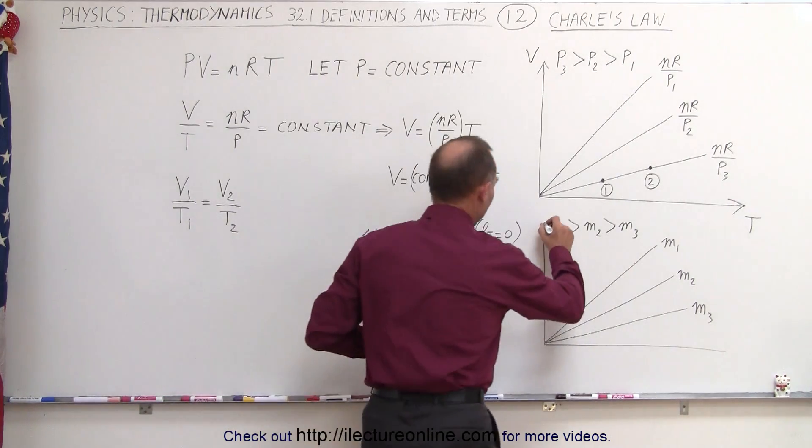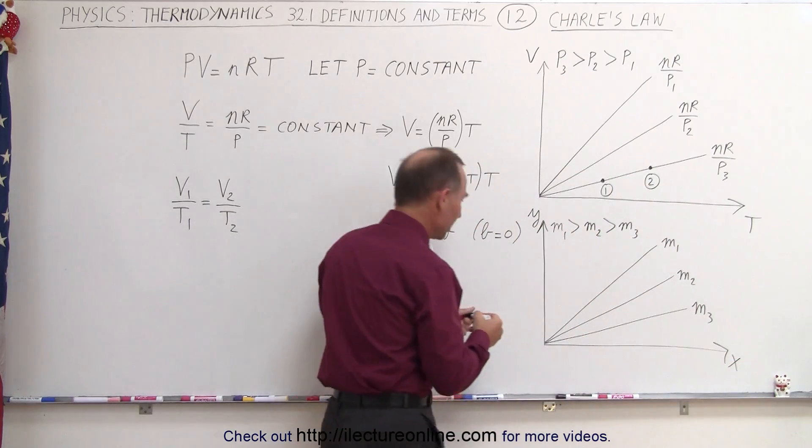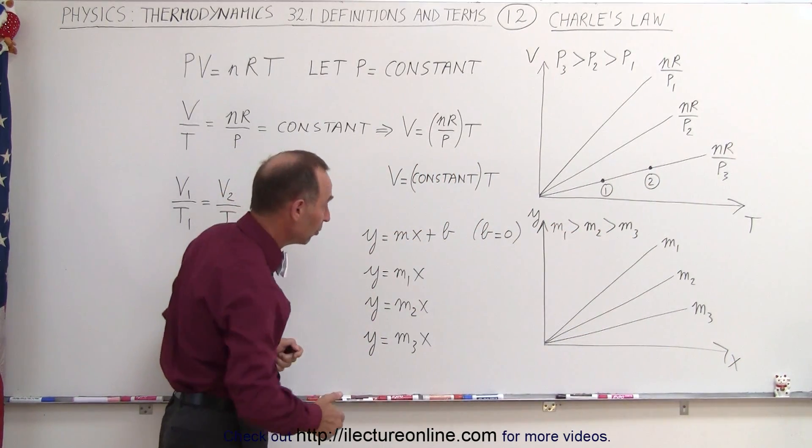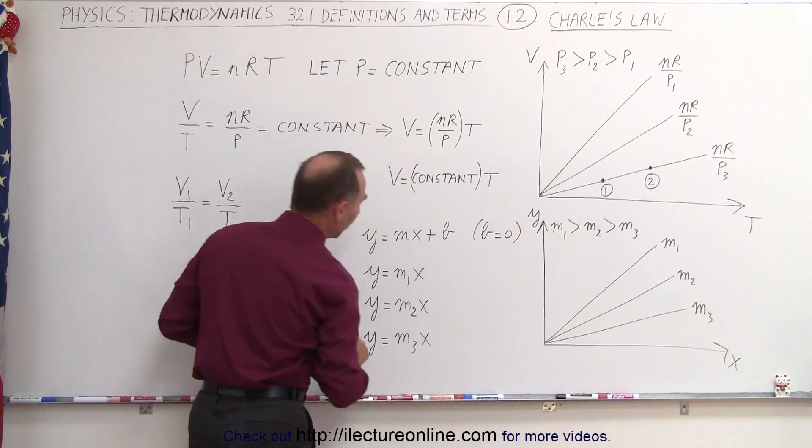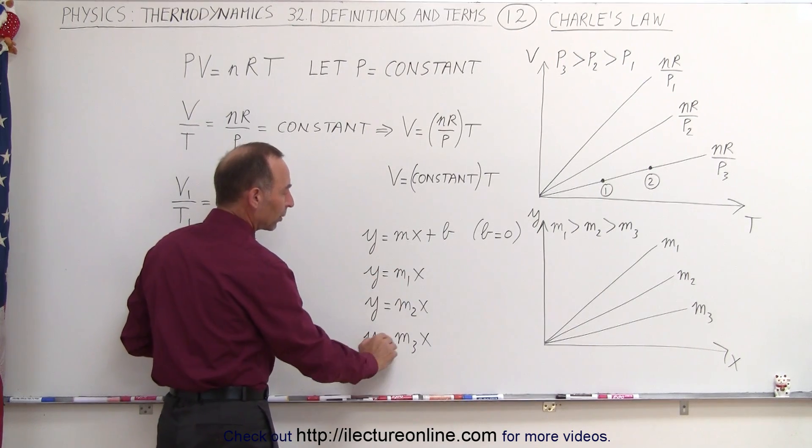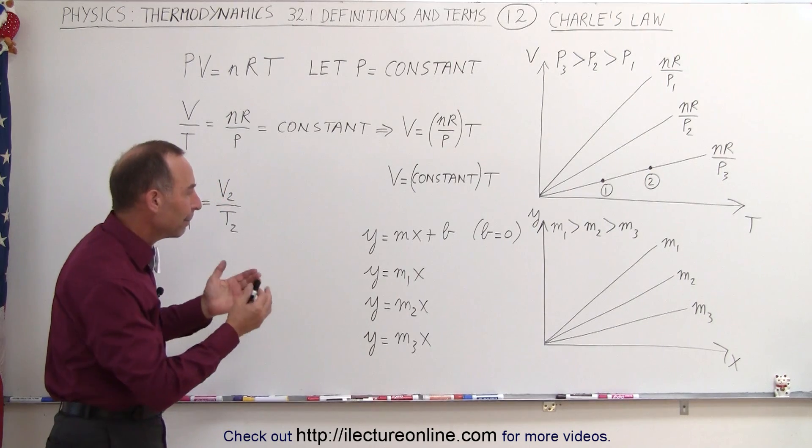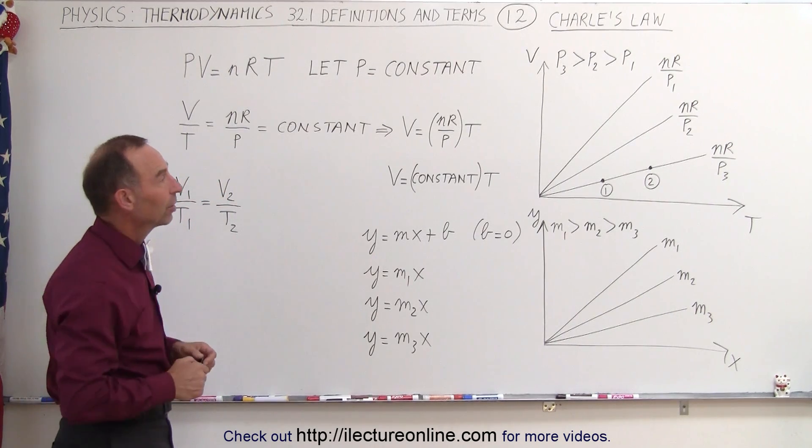And if this is here our Y-axis, this here is our X-axis, you can see that the linear equations can be represented by different slopes. If we let B equal zero, since all the lines go to the origin, we can then say that Y equals M1X or Y equals M2X or Y equals M3X. So the steepness of each of those lines depends upon the value of the slope. The larger the slope, the steeper the line.